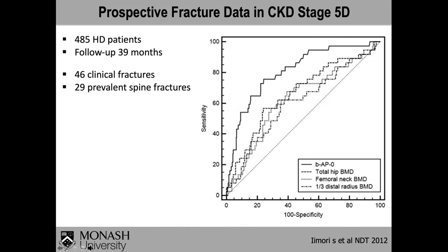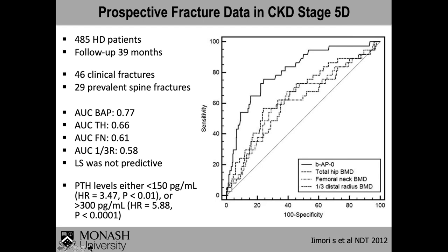Prospective fracture data in CKD stage 5D show that fractures can be predicted using bone alkaline phosphatase and hip bone density. The AUC for bone alkaline phosphatase was 0.77, for total hip bone density 0.66, for femoral neck bone density 0.61, and for 1/3 radius 0.58. Lumbar spine bone density was again not predictive. PTH levels either below 150 or above 300 were also predictive of fractures, confirming the value of measuring both bone density and PTH in haemodialysis patients.